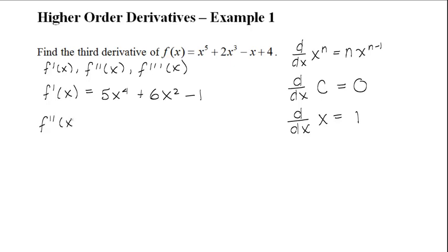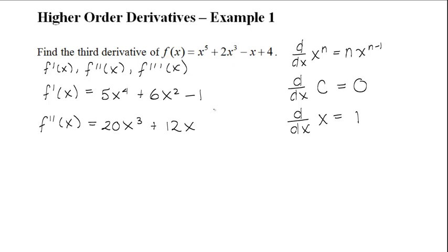Now we can take our second derivative. To find it, we take the derivative of the first derivative we just found. For the first term, 5x to the power of 4 has a coefficient of 5; the derivative of x to the power of 4 is 4x cubed, and multiplying 4 by 5 gives us 20x cubed. For the second term, the derivative of x squared is 2x, and multiplying by 6 gives plus 12x. The derivative of minus 1 is 0 since it's a constant.